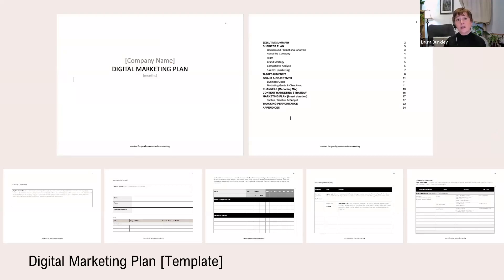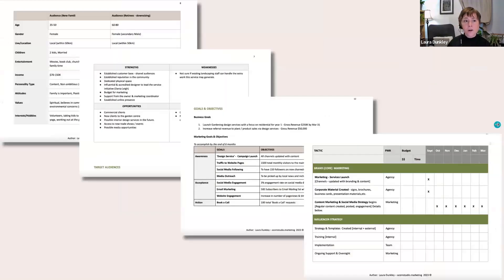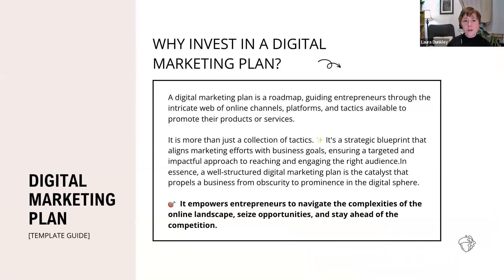This is a very basic digital marketing plan you can print out. It's on Google Docs as an editable version so you can create your own plan. When you download it, you'll have a sample company — many of you know we use Garden Grows as our example company — so you'll see an example as we go through it along with this recording.